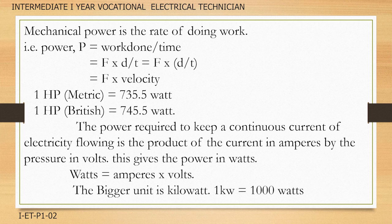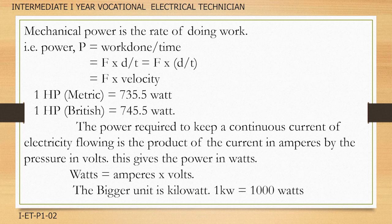1 hp equals 735.5 watts in the metric system; 1 hp equals 745.5 watts in the British system. The power required to keep a continuous current of electricity flowing is the product of the current in amperes multiplied by the pressure in volts, giving the power in watts. The bigger unit is kilowatt; 1 kW equals 1000 watts.